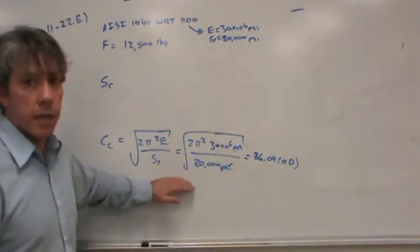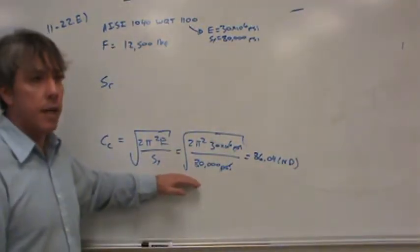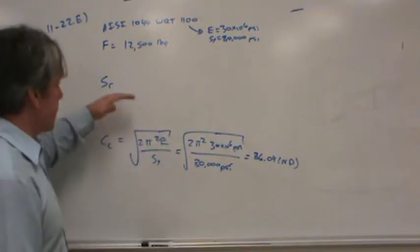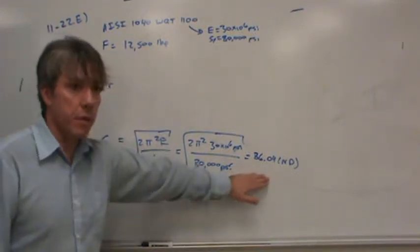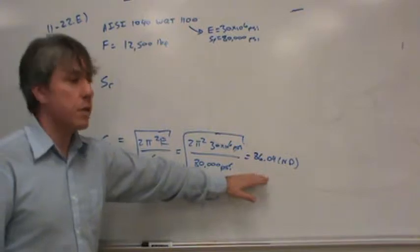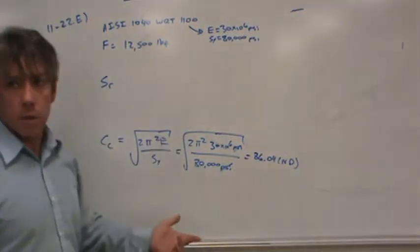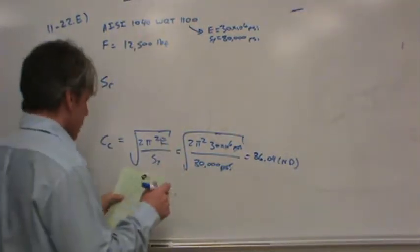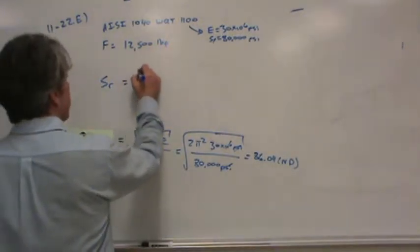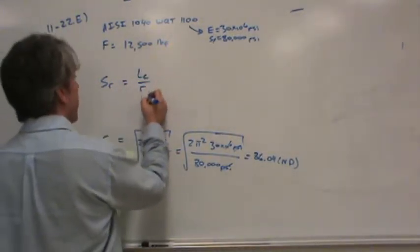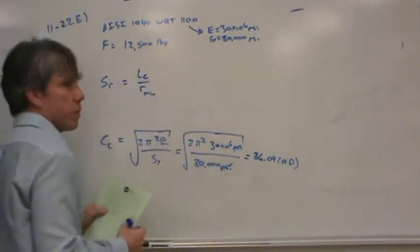Now, this is the cutoff. This is the cutoff that will tell us whether or not the column is long. If the slenderness ratio is above this, we'll consider it a long column and we will use the Euler equation. If it's shorter than this, then we'll use the Johnson equation.